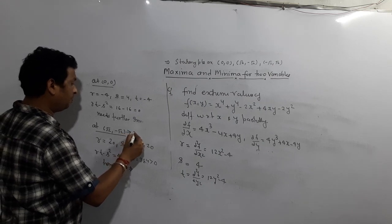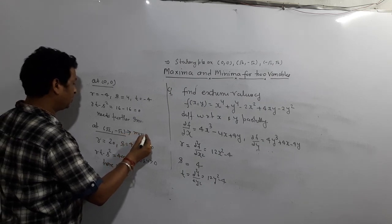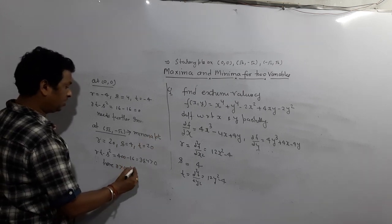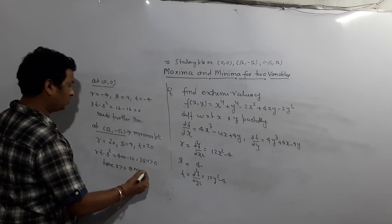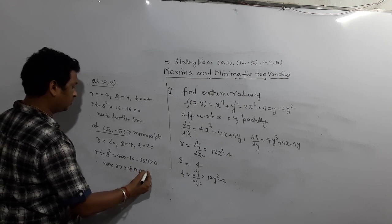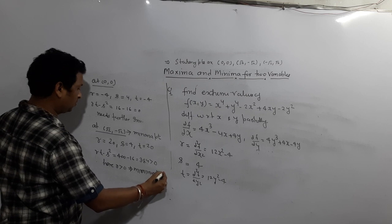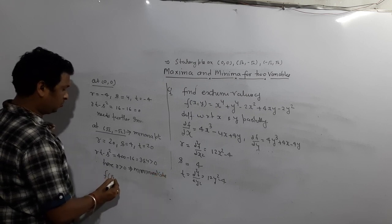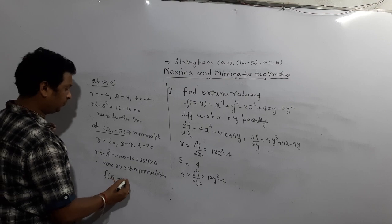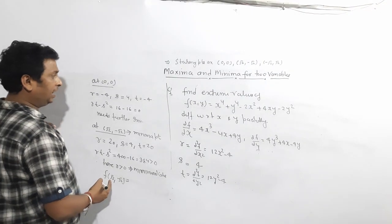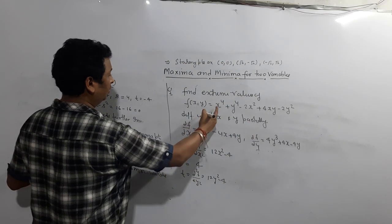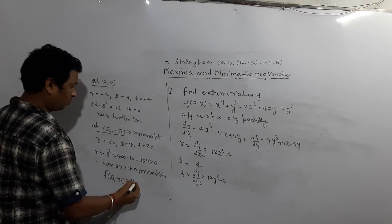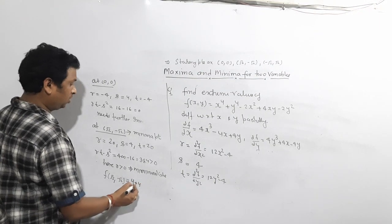At point (0, 0): R = −4, S = 4, T = −4. So RT − S² = (−4)(−4) − (4)² = 16 − 16 = 0. This means it needs further investigation.